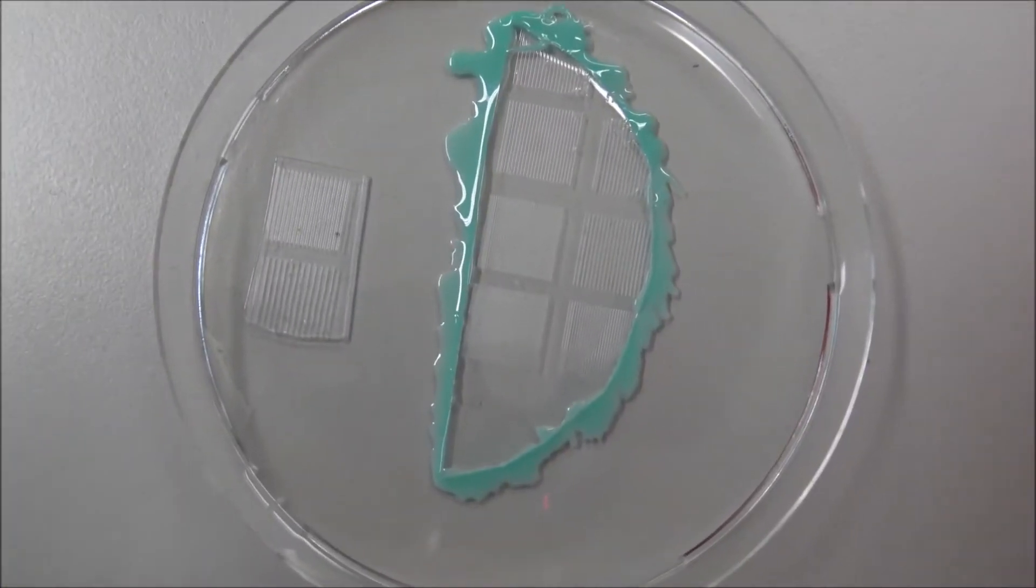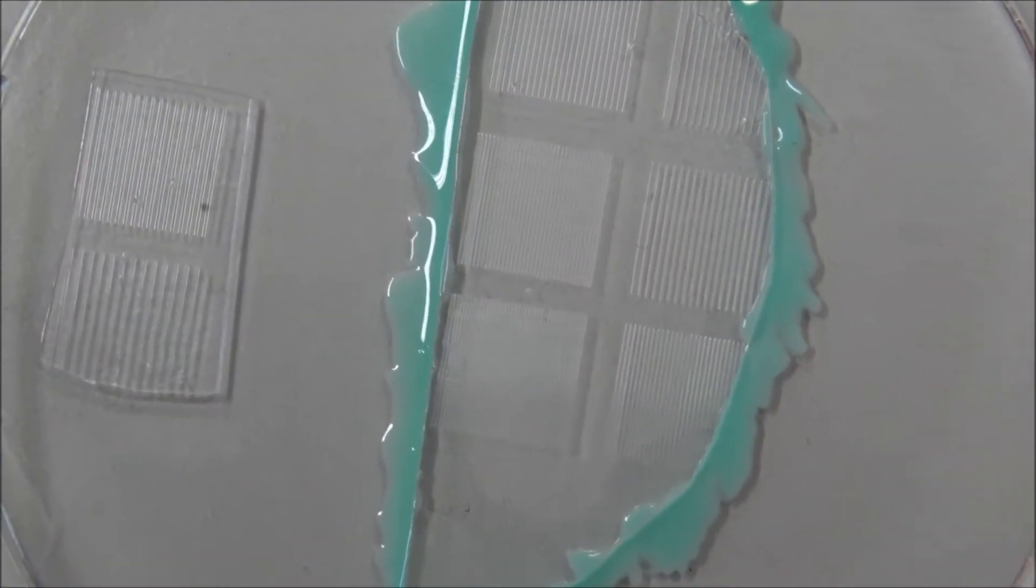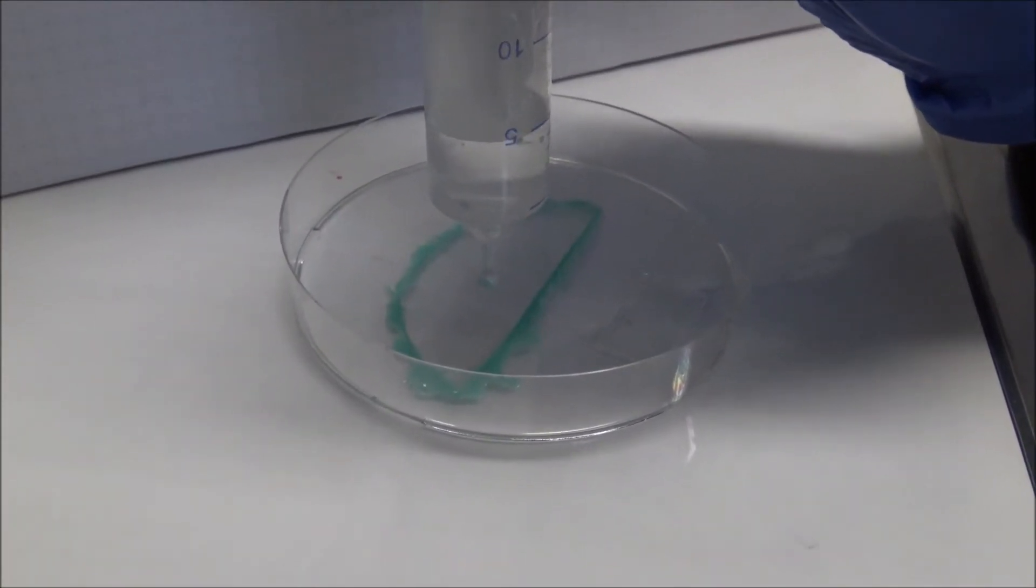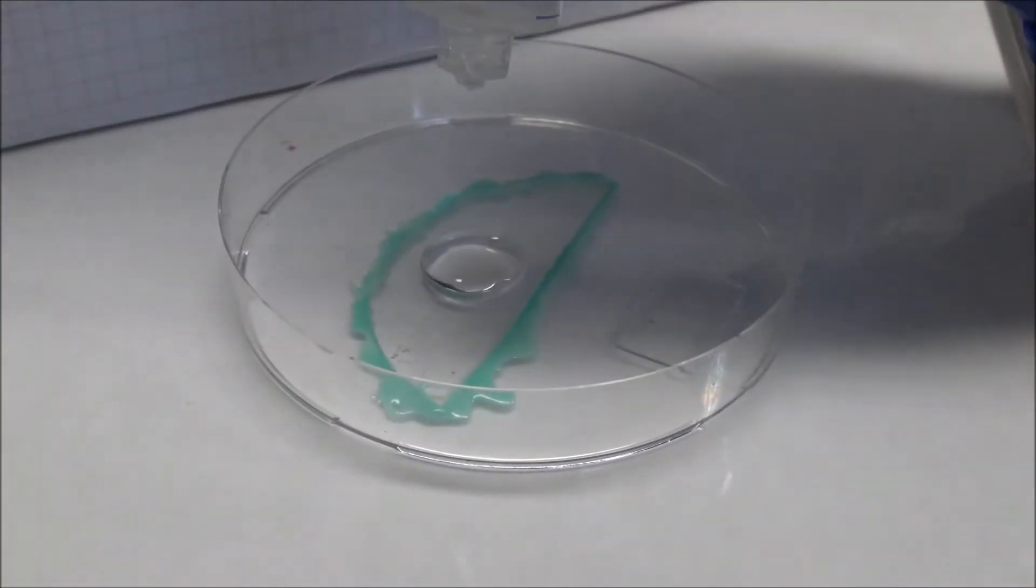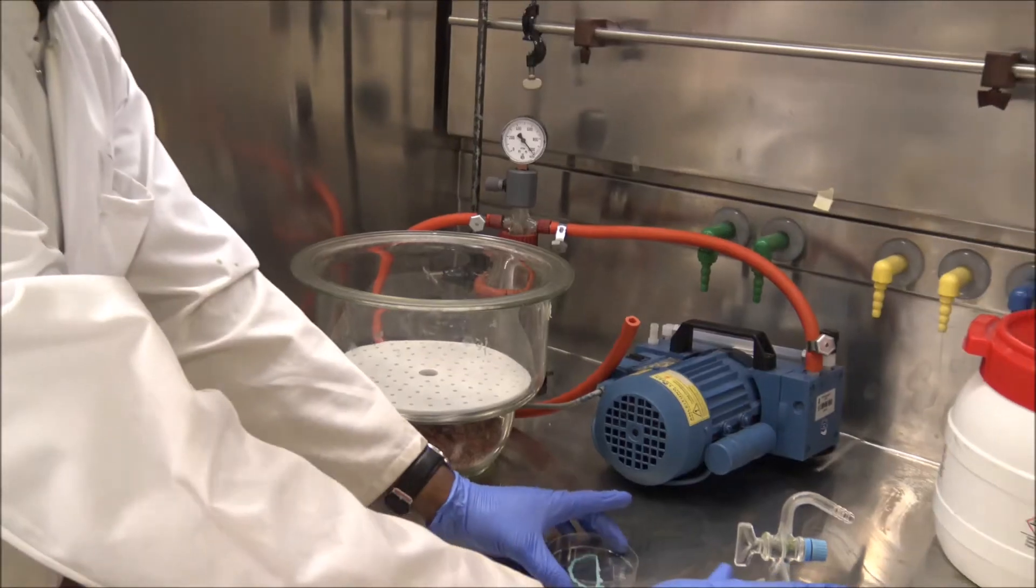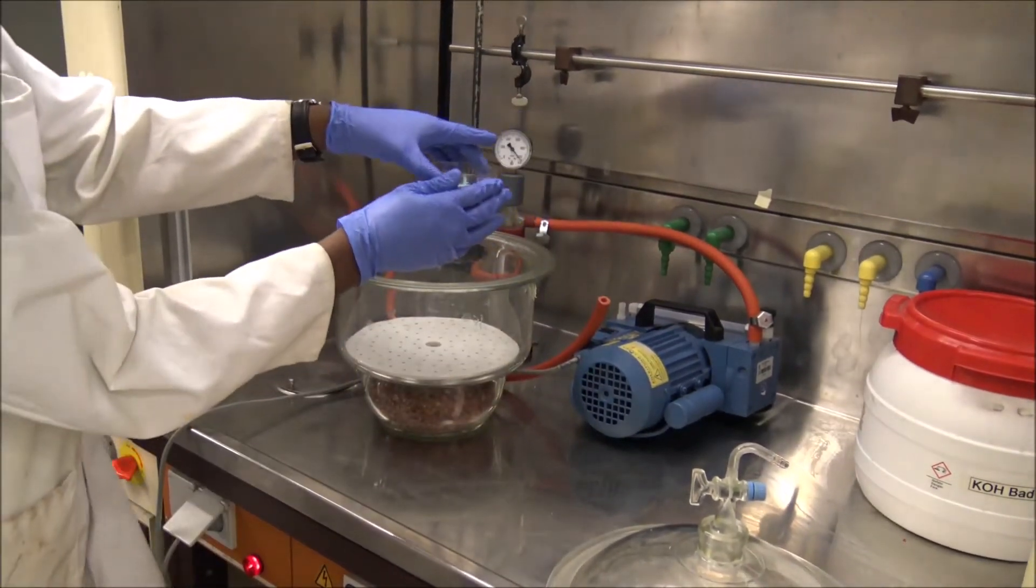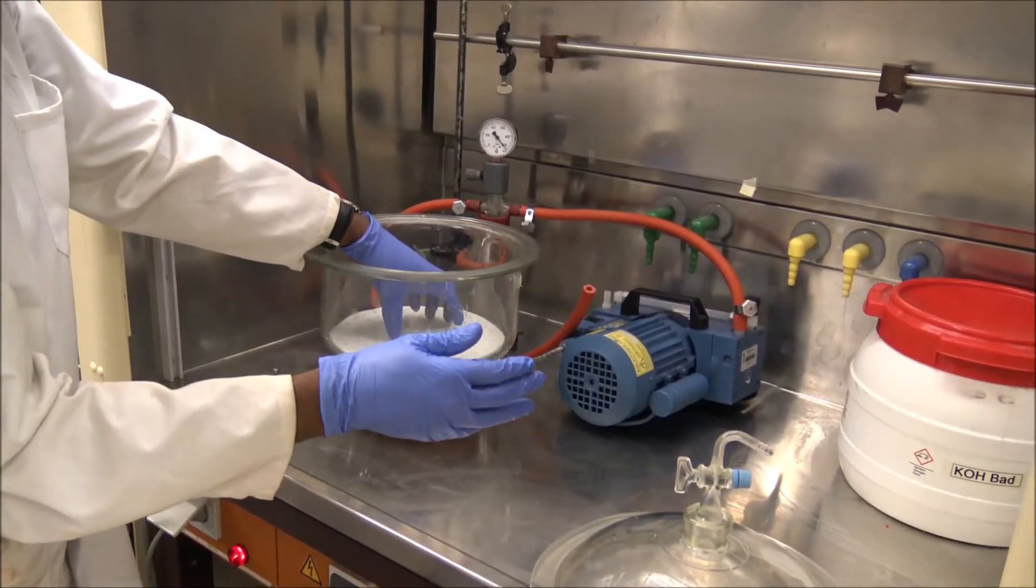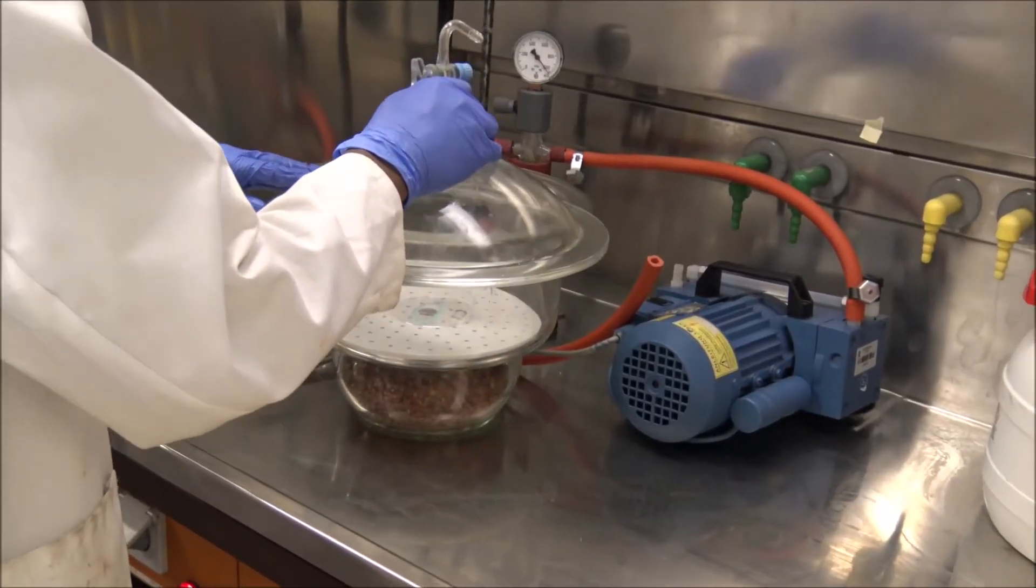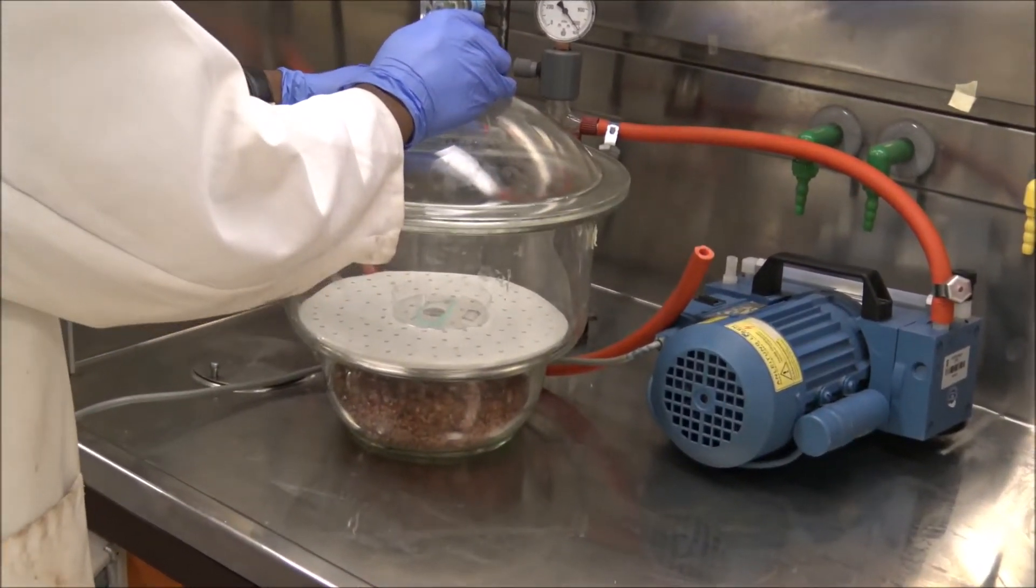We used concave molds to get PDMS surfaces with curvature radii of 48, 63, and 166 micrometers. Then we vacuumized to avoid air bubbles in the polymer mixture before the polymerization took place at 85 degrees Celsius in the preheated oven for one hour.